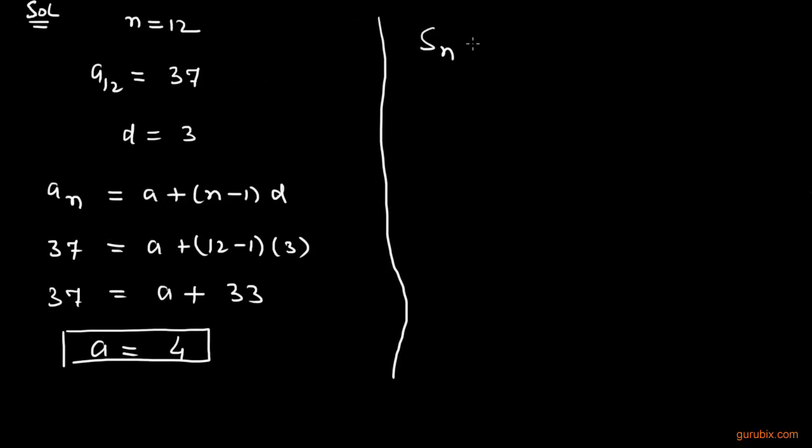We shall use the formula Sₙ equals n over 2 and the sum of first and the last term. You should remind that aₙ is equal to L. We can write aₙ or small L.